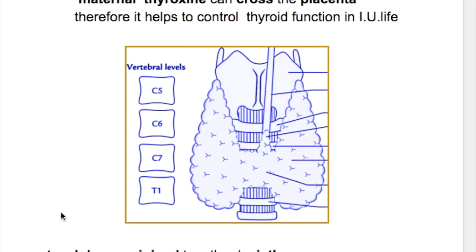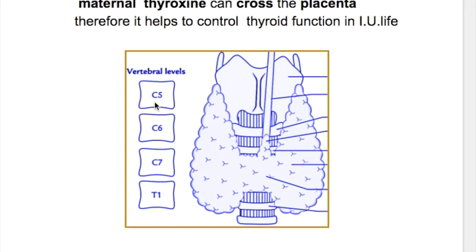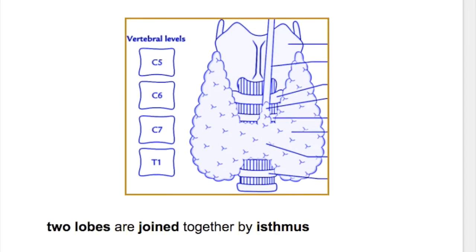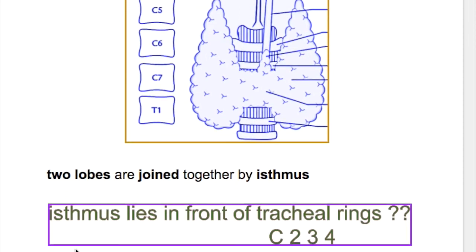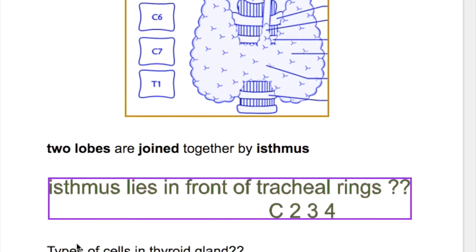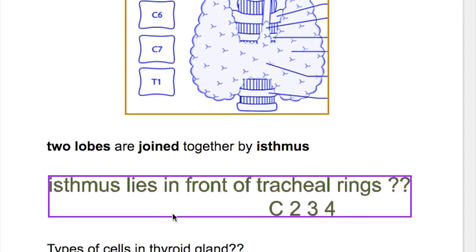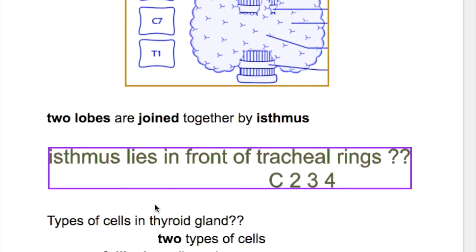What is the vertebral level of the thyroid gland? From cervical 5 to thoracic 1. And what is the level of the isthmus? The isthmus lies in front of the second, third, and fourth tracheal rings.